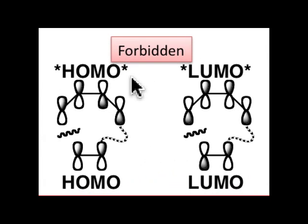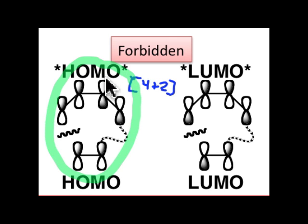Now consider the 4 plus 2 reaction, which is thermally allowed suprafacial plus suprafacial, but photochemically forbidden. The reason it's photochemically forbidden is because there's a mismatch in the phases. Take the case of the HOMO star interacting with HOMO.